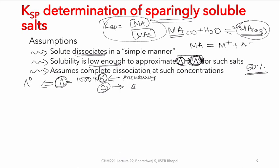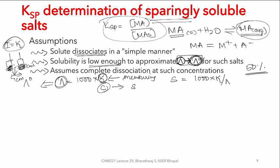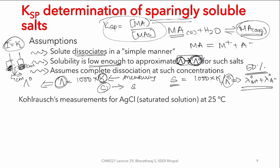Therefore, rearranging the equation gives s = 1000κ / λ°, and λ° can be estimated from the λ° of each of the individual ions. Once this is determined, the approximated solubility can be found directly. Let's take an example where Kohlrausch measured such things for AgCl at 25°C. His measurement showed that for AgCl in water the conductivity is about 3.41 × 10⁻⁶ S/cm.